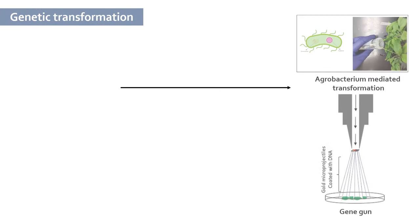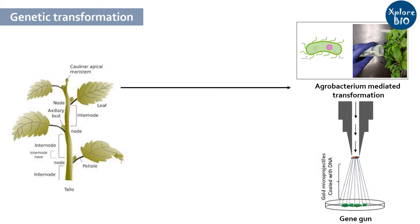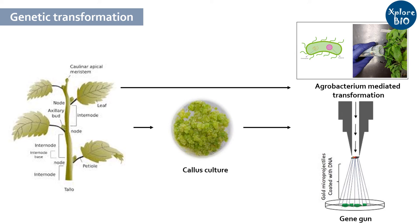For genetic transformations, nodal meristems or leaf are some of the generally used source materials. Sometimes callus — which is de-differentiated plant cells — is induced using a combination of auxin and cytokinin before proceeding for transformation.